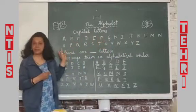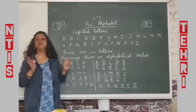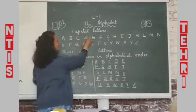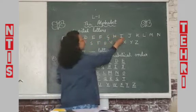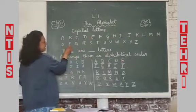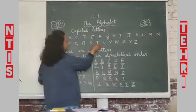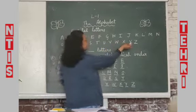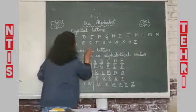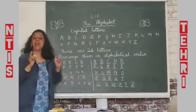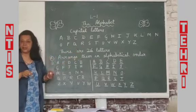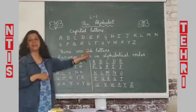Now these are your English alphabet, children, and now we have to count — how many alphabets are there in English? 1, 2, 3, 4, 5, 6, 7, 8, 9, 10, 11, 12, 13, 14, 15, 16, 17, 18, 19, 20, 21, 22, 23, 24, 25, 26. So there are 26 letters in the English alphabet. Have you understood? If you have not, please read it yourself and count, and you will come to know that there are 26 letters.